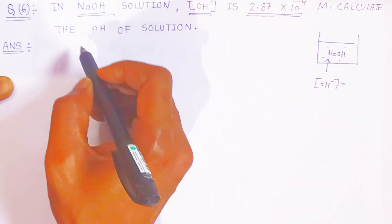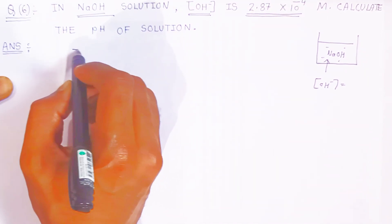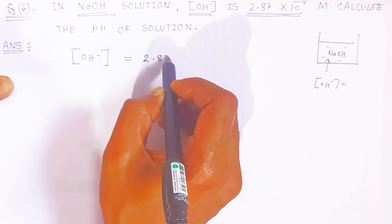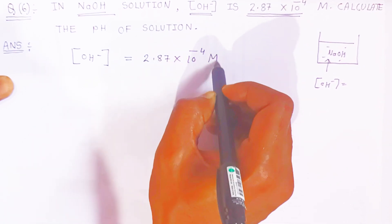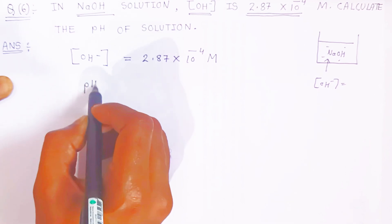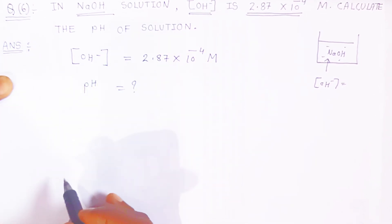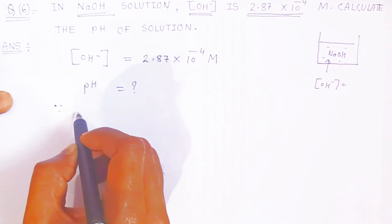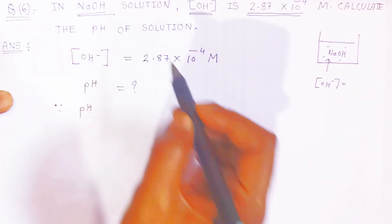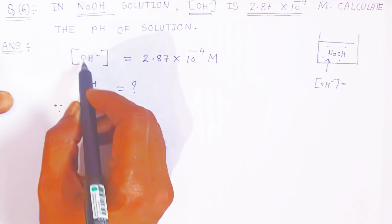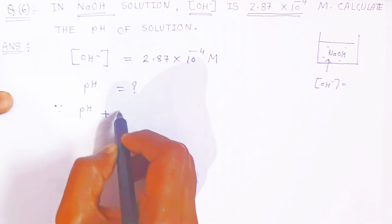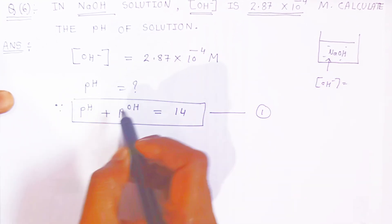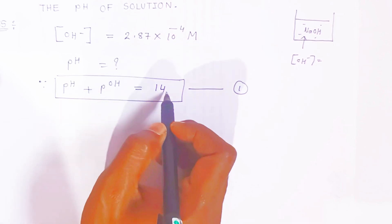So what is given — we will write first. The concentration of hydroxyl ion is given: 2.87 × 10 raise to minus 4 molar. You have to calculate the pH. Since you are knowing pH and pOH, you can calculate pOH from the concentration of hydroxyl ion. Since pH plus pOH is always equals to 14, with the help of this formula, first we will calculate pOH, and once you know the pOH, you can subtract and you will get the pH.